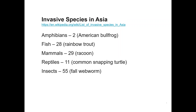Looking it up, Asia has two invasive amphibians including the American bullfrog, invasive fish including our rainbow trout, invasive raccoons, the common snapping turtle, and 55 invasive insects including the fall webworm. It's a two-way street — a global economy. So it's an important point to remember.